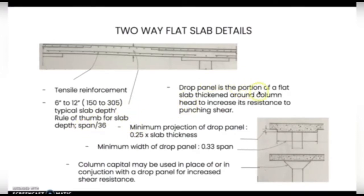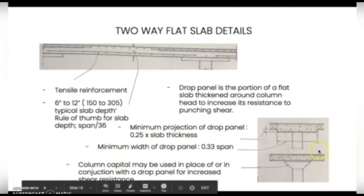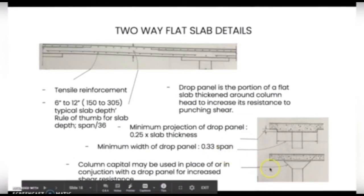The drop panel is the portion of a flat slab enlarged around the column head to increase its resistance to punching shear. The minimum projection of the drop panel is 0.25 times the slab thickness. The minimum width of the drop panel is 0.33 times the span. Column capitals may be used in place of or in conjunction with a drop panel for increased shear resistance.